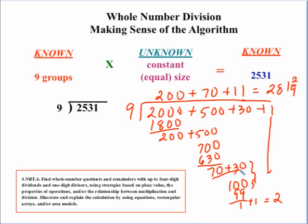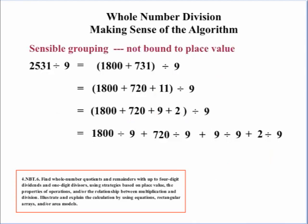So, again, sometimes it's better to go with some type of sensible grouping that you're not bound to place value. Again, using the power of the distributive property. So, if we take 2,531 and we break it down, again, 9 times 2 is 18. So, a good way to break down the 2531 is 1,800 plus 731. Now, let's worry about the 731. 9 times 8 is 72. So we can break this down to 720 plus 11. Then, we're worried about the 11. That breaks down to 9 plus 2.